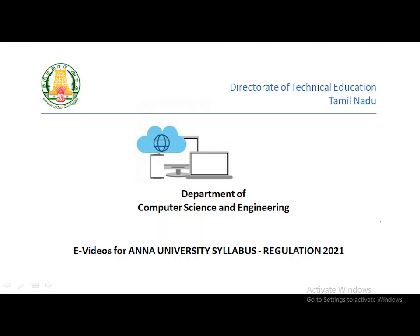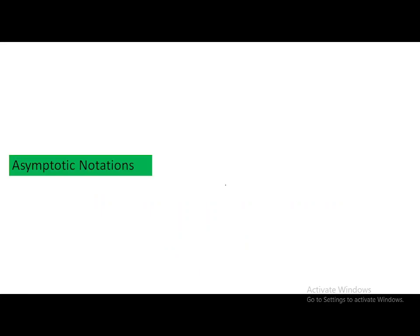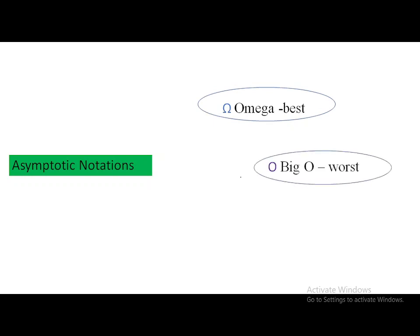Hello everyone, today we are going to look at a topic from the course Algorithms, from the very first unit introduction, and the topic for discussion is the properties of asymptotic notations. Let us recollect what are all the asymptotic notations we have seen in last class. To represent the best case analysis of an algorithm, we will use Omega; to represent worst case, we will use Big O; and for the average case, we will be using Theta notation.